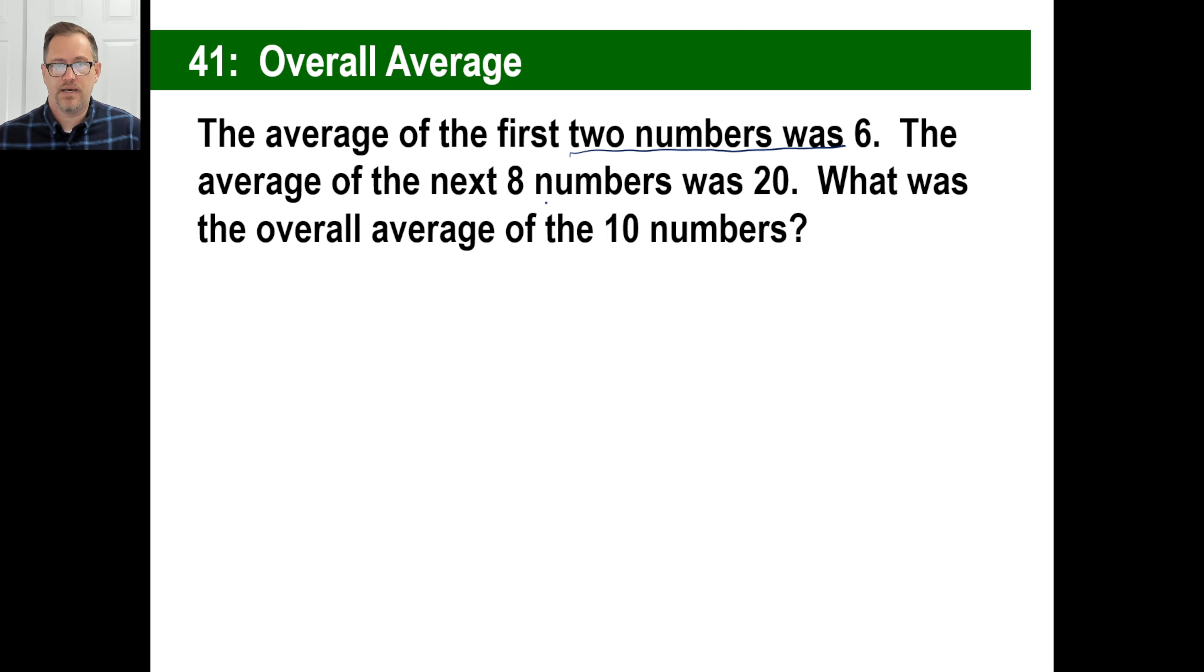So let's take a look. If you have two numbers and their average was six, you're going to go two times six, right? It's like having two sixes. Now, it might be, you know, 15 and then negative three. But still, it's the same thing as two times six. The average of that next eight numbers was 20. So there are eight numbers, and they average 20. That's a total of 160. So we have a total of 172 with all the numbers. Now, how many numbers are there? Well, there are two numbers here, and there are eight numbers there. So that's a total of 10 numbers. So 172 divided by 10, of course, is 17.2.